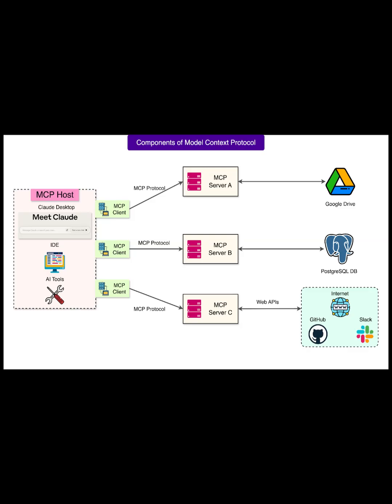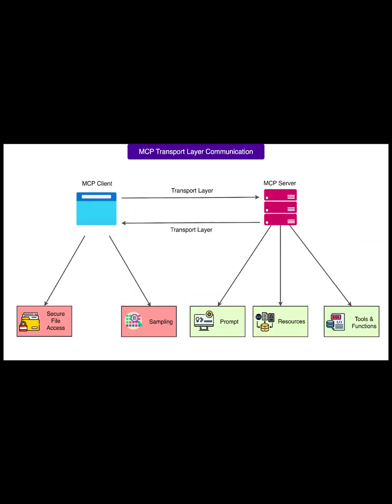Why this beats ad hoc connectors? Standardization: one protocol makes integrations predictable and testable. Reuse: any MCP-enabled tool becomes plug-and-play across hosts. Observability: JSON RPC messages are inspectable for debugging and auditing. Security and policy: consistent transports and message shapes simplify auth, rate limits, and governance across many systems.